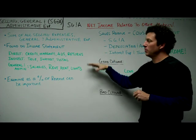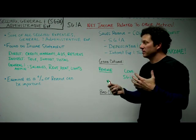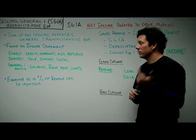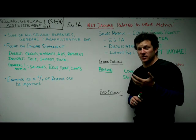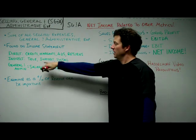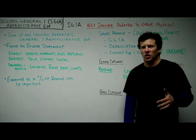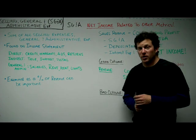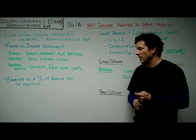Here are a few examples of those expenses. Direct selling expenses include things like credits, warranty expenses, advertisements, or returns associated with specific products. Indirect selling expenses would be things like telephone, interest payments, or postal charges — costs spread across all your different products because they're not attributable to one specific product.